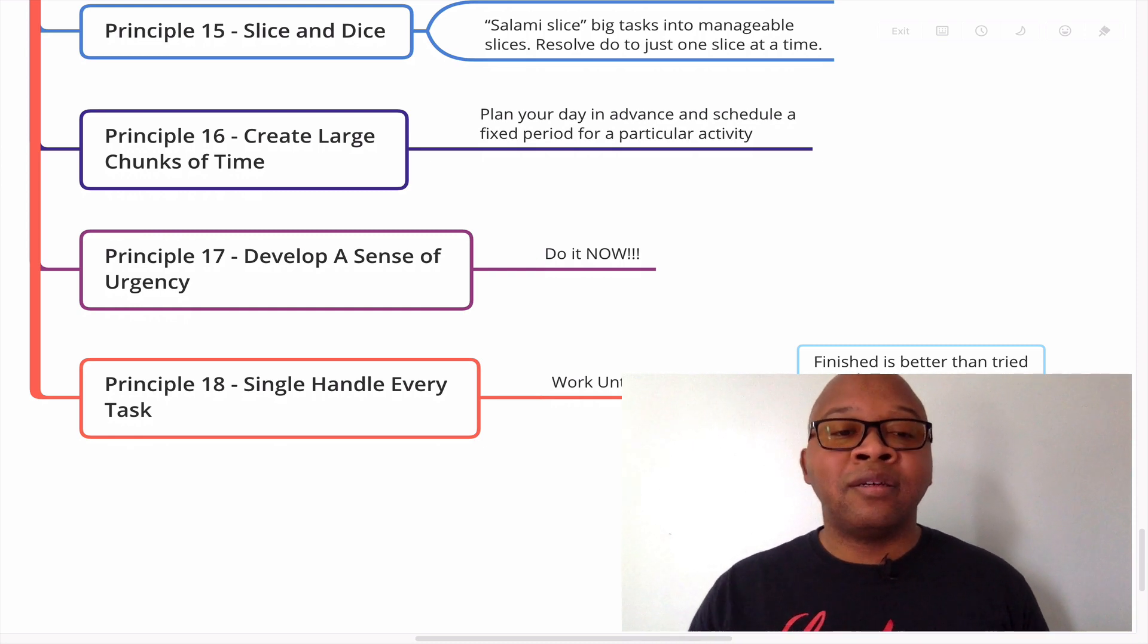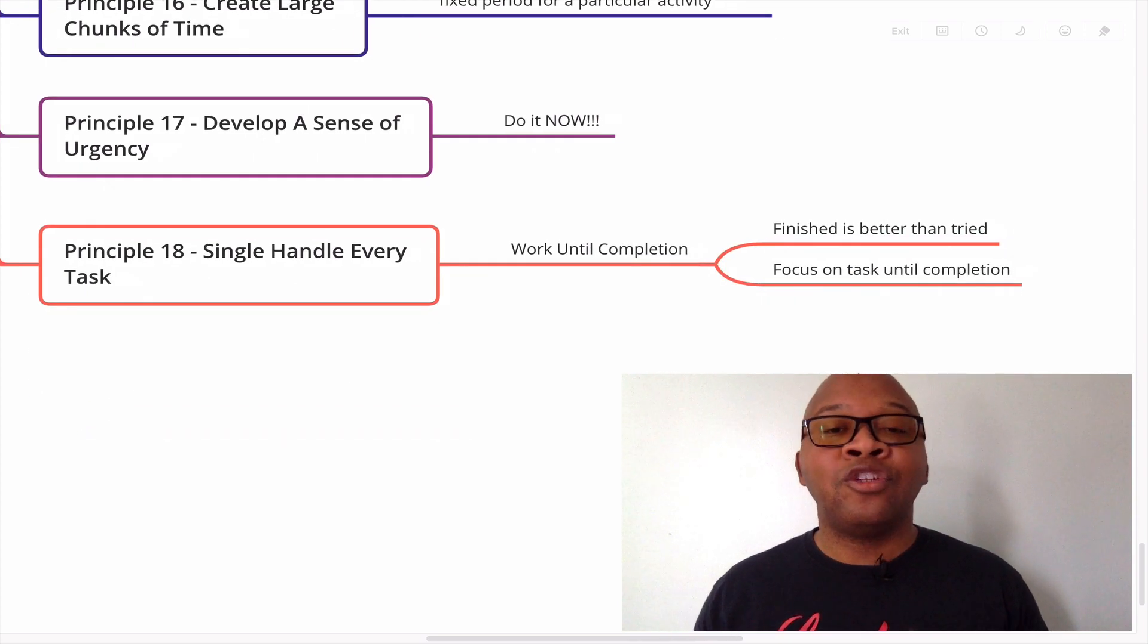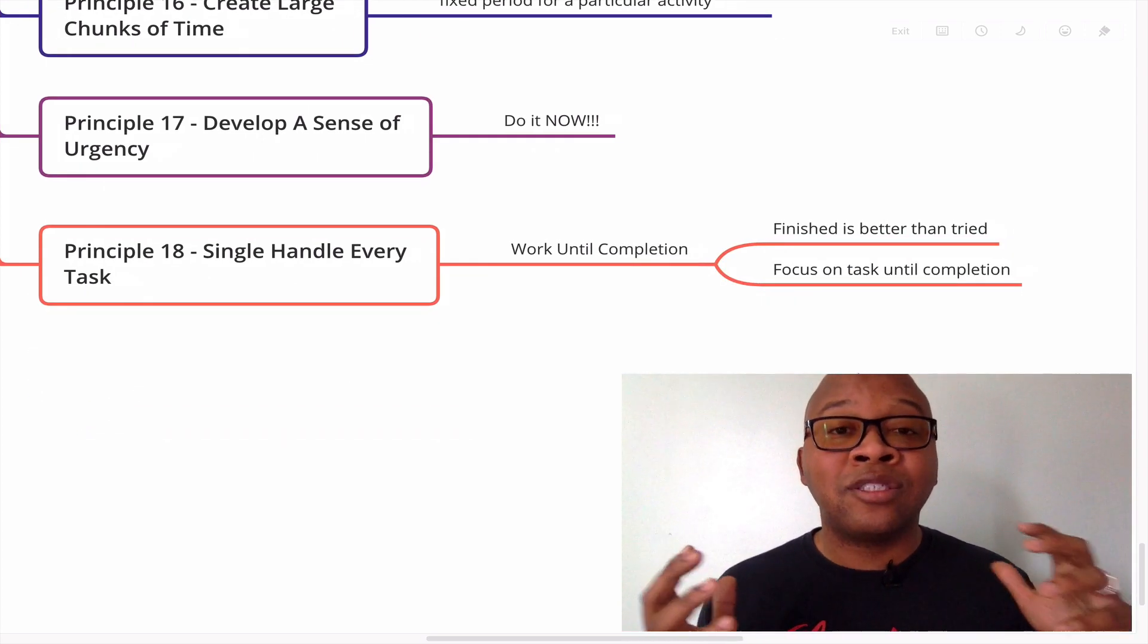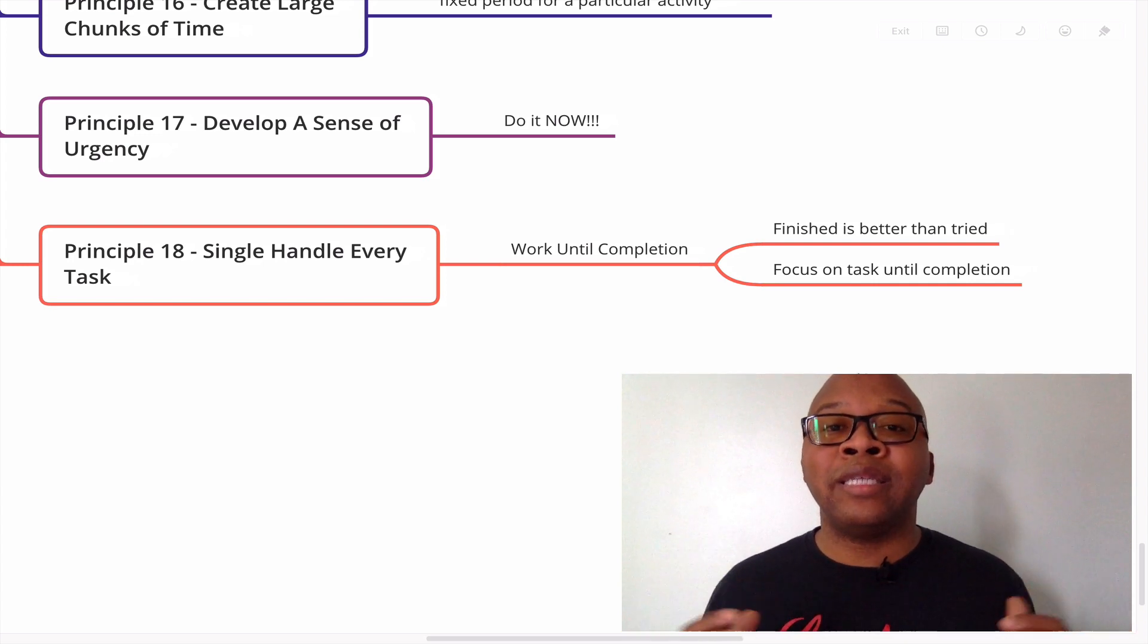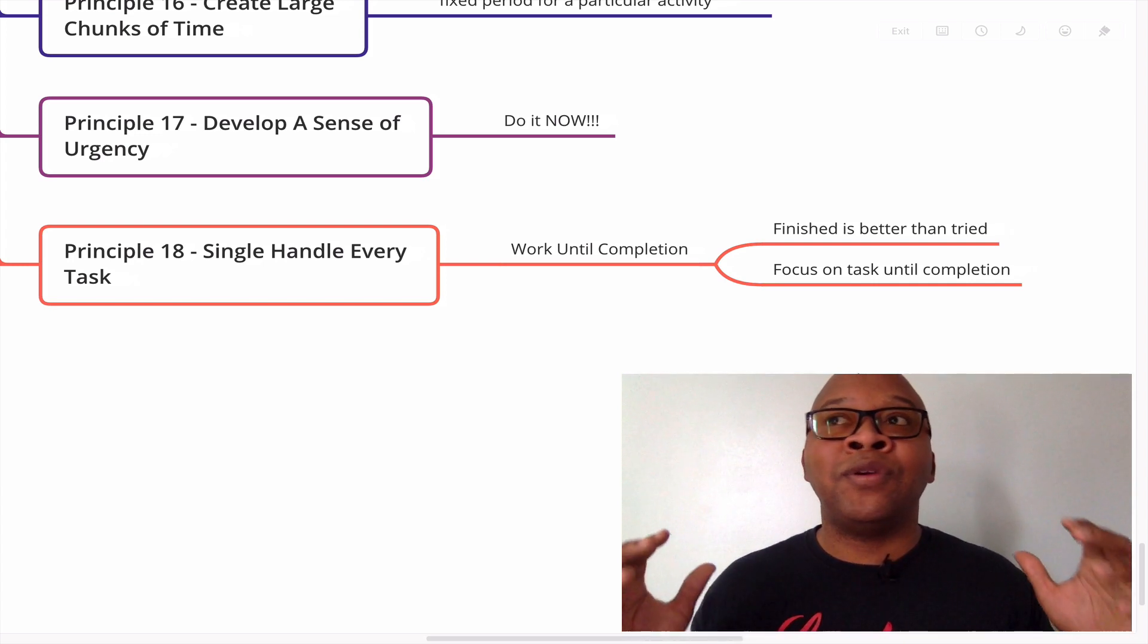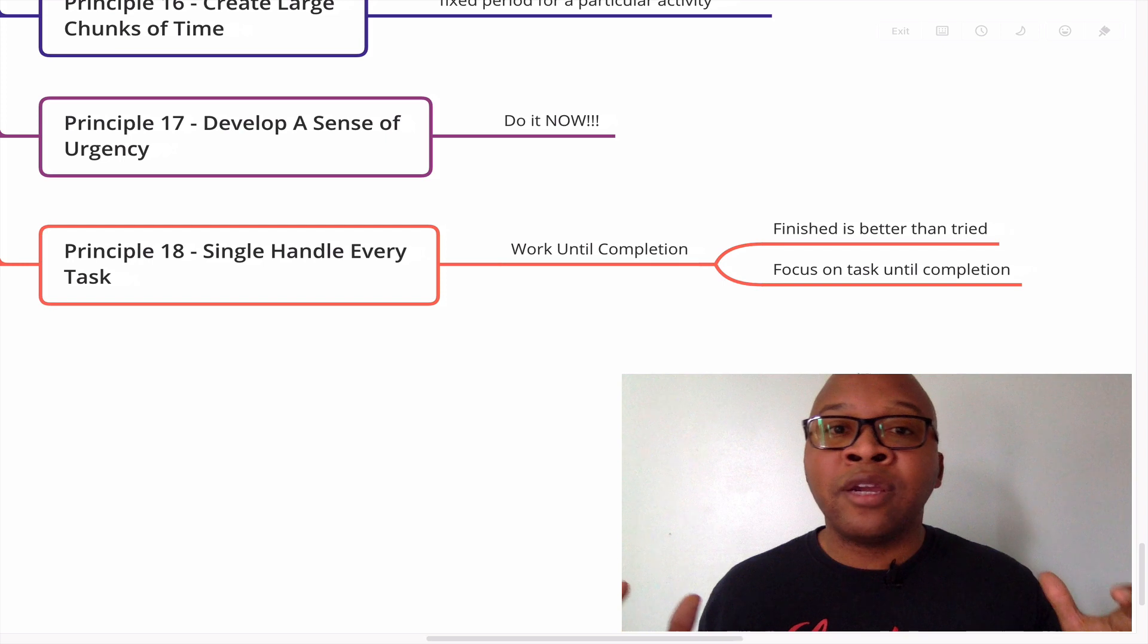Principle 17, develop a sense of urgency. Do it now. Do it now. Do it now. Not tomorrow. Get started today. Act as if you had just one day or two days to do this, that it was due in two or three days. What would you do? How would you act differently? You would have a sense of urgency. So do it now.